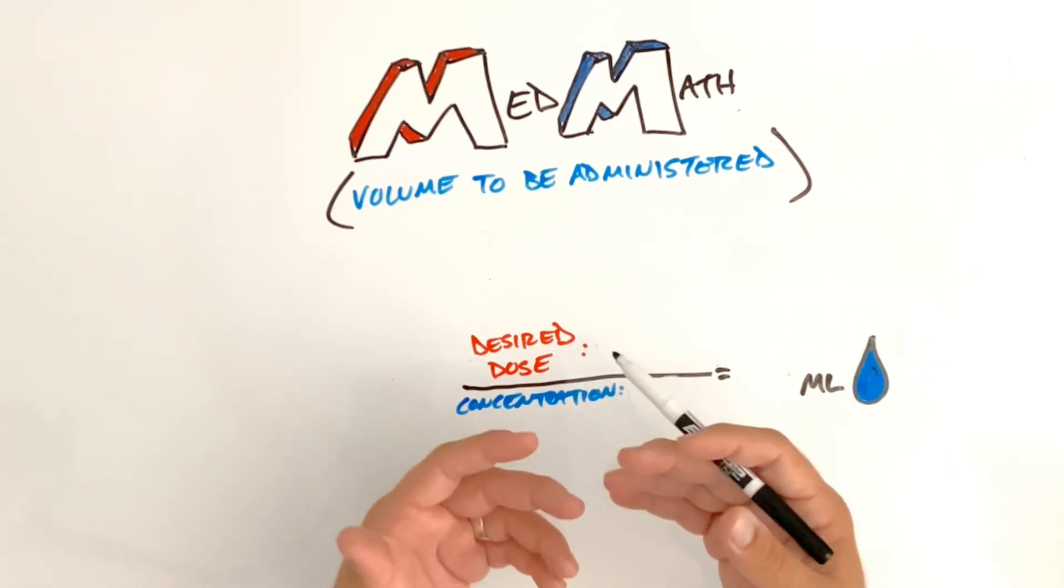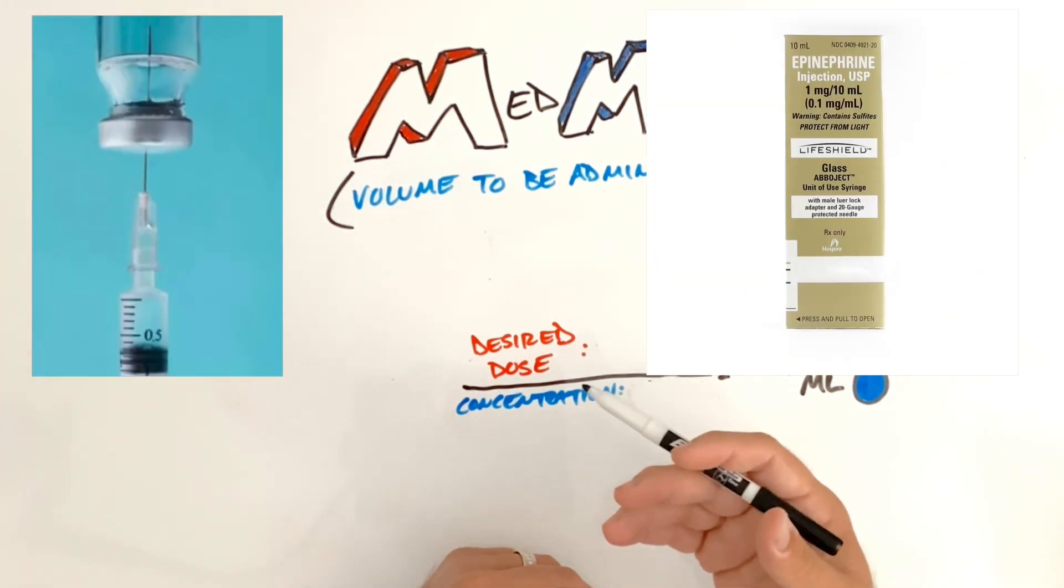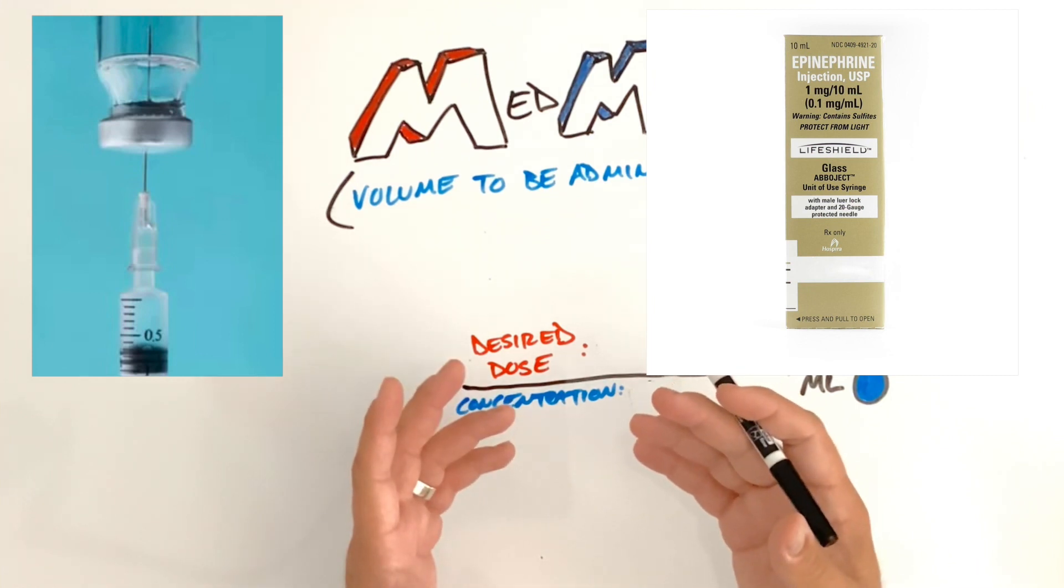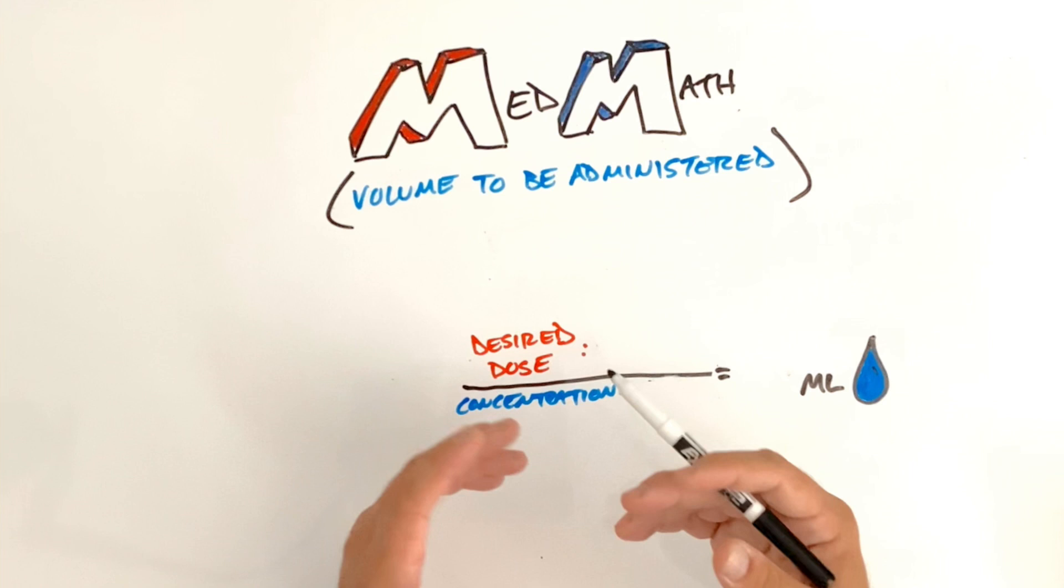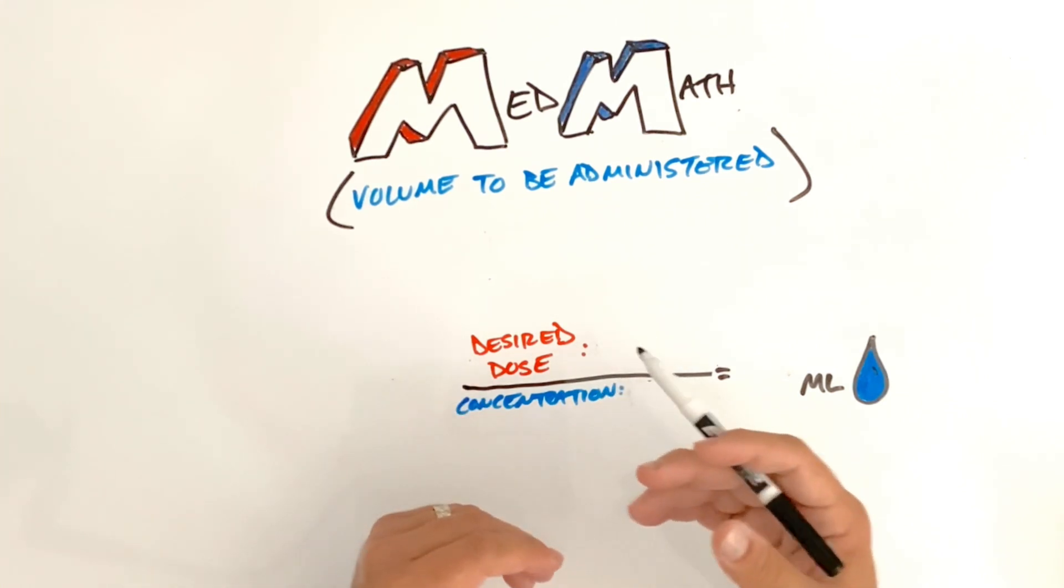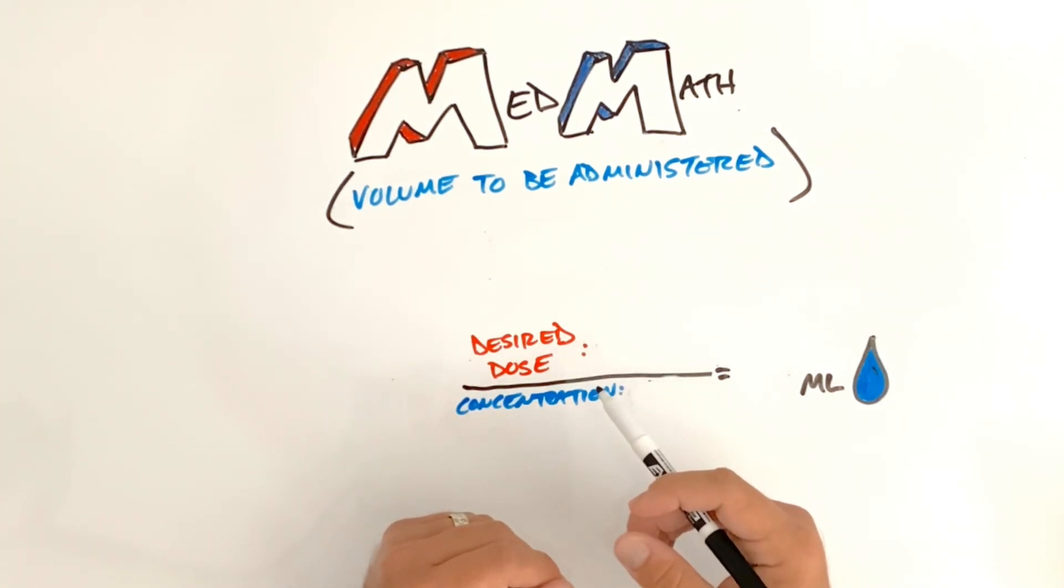So anytime we're doing MedMath, we're drawing up medications, or we're using a pre-filled syringe, we usually know the dose of what we want to give the patient. It can be micrograms, milligrams, grams, but there's a quick equation to determine how many mLs you're drawing up and be accurate about it.